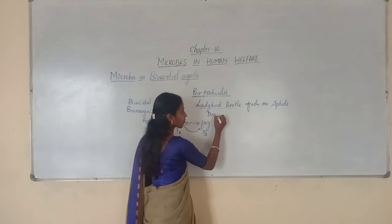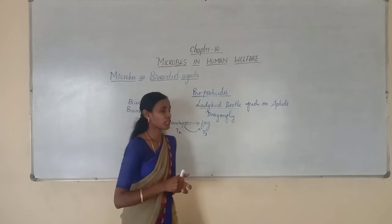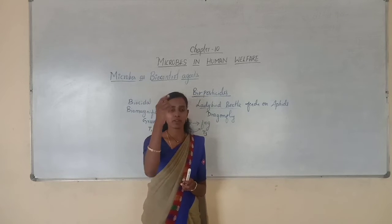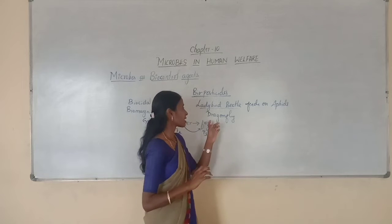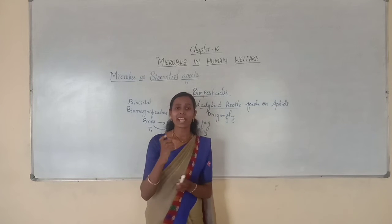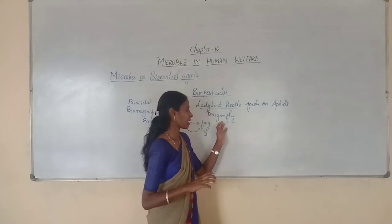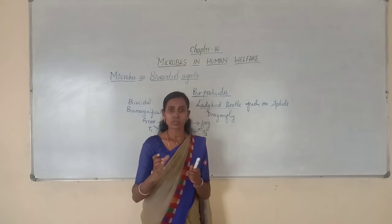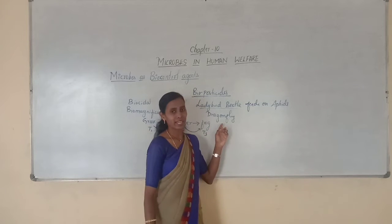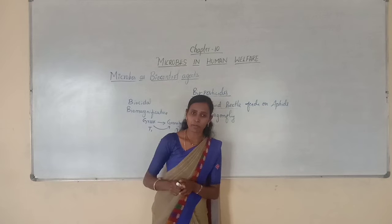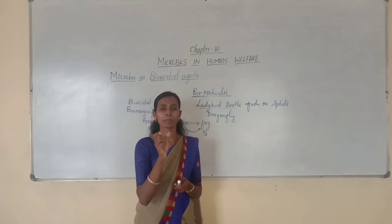Another example is the dragonfly. Dragonflies move in the air like a helicopter. Dragonflies are used to get rid of mosquitoes — they feed on mosquitoes so that mosquito growth can be decreased with the help of dragonflies. The most powerful and most important one used on a commercial scale is a soil bacteria.